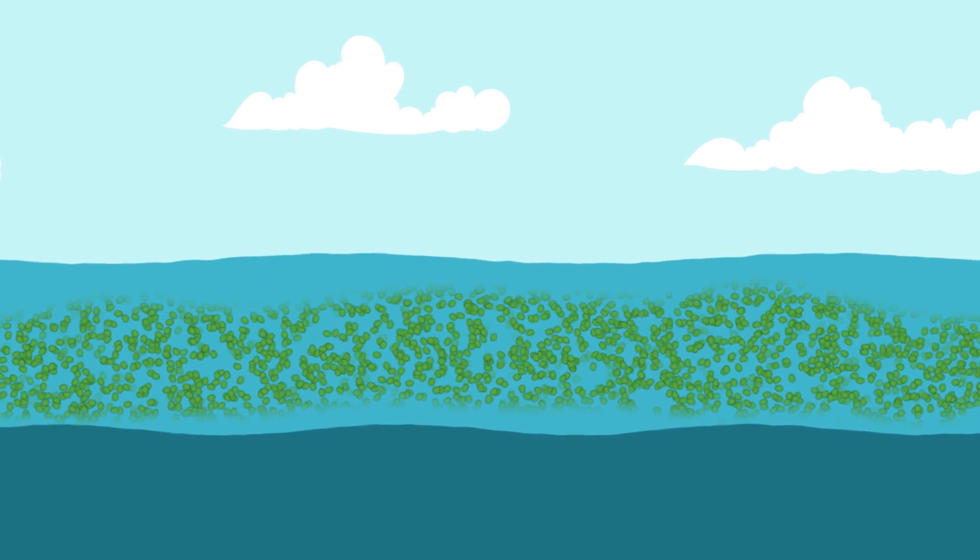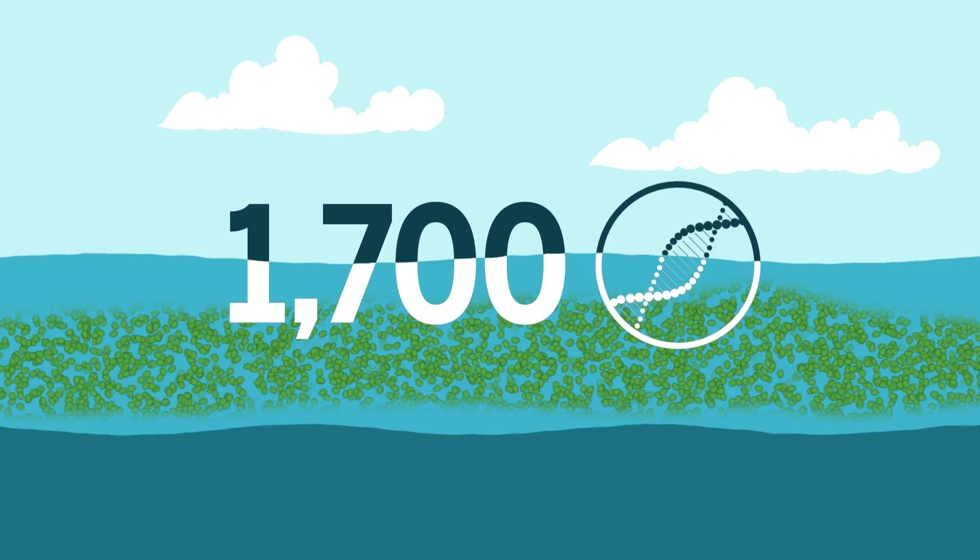At the surface of the ocean, where nutrients are scarce, high light-adapted Prochlorococcus have a sleek genome of about 1,700 genes and can still grow on almost pure seawater, carbon dioxide, and sunlight.